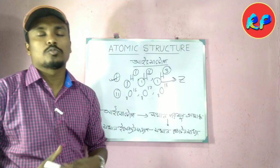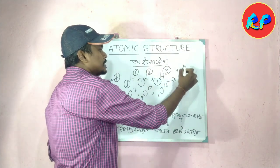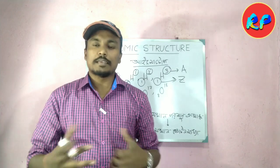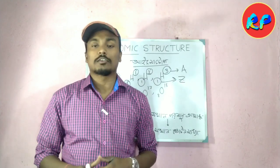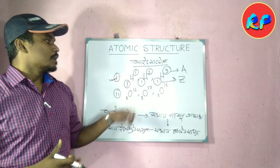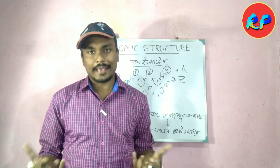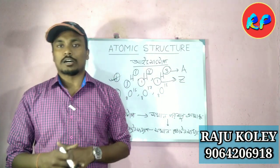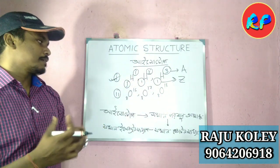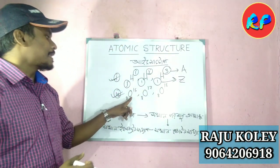Isotopes are atoms that have the same atomic number but different mass numbers. The mass number is different, but the atomic number remains the same. Isotopes can be separated from each other using various methods.